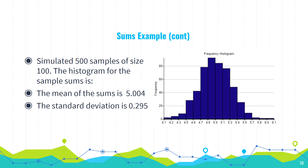For both sample means and sample sums, the Central Limit Theorem tells us the normal distribution is going to be useful for modeling these. But this doesn't mean that if you take a sample of 500 and plot a histogram, you're going to see a normal distribution — that's not going to happen. What happens is if you take a big sample, calculate the mean or sum, and then make a histogram of many such sample means or sums, that's where the normal distribution emerges. The Central Limit Theorem doesn't say that as sample size grows, the sample itself will look like a normal distribution. It's talking about the distribution of the sample mean or sample sum.